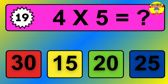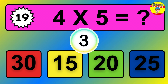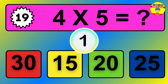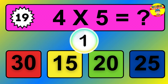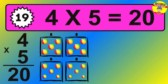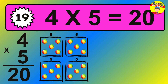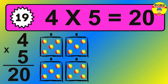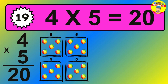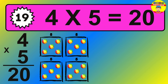Question 19. 4 times 5 equals what? The answer is 4 times 5 is 20. To calculate, we have 4 groups with 5 balls each one. So how many balls do we have? 20 balls.